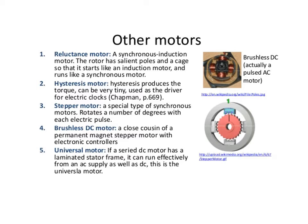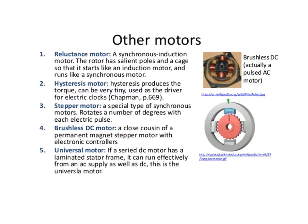Now we'll look at the reluctance motor in detail. The reluctance motor is a synchronous induction motor — the rotor has a salient pole and a cage so that it starts like an induction motor and runs like a synchronous motor. It uses a soft magnetic core managed by the application of current in the stator coil. The magnet is spun by a three-phase AC supply with no rotor voltage. The gear teeth are designed to increase magnetic flux driving the rotor, producing symmetry that gives it rotational motion based on the permeability of the rotor.